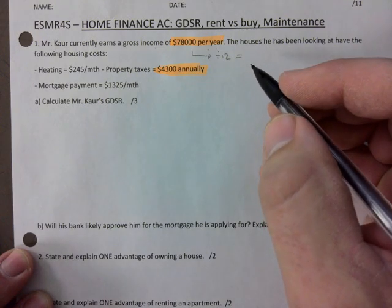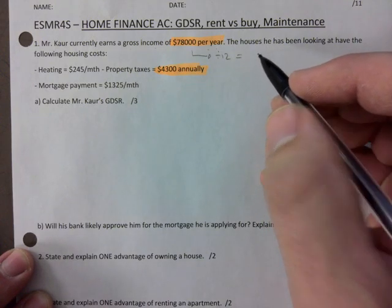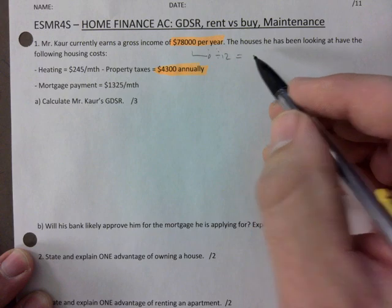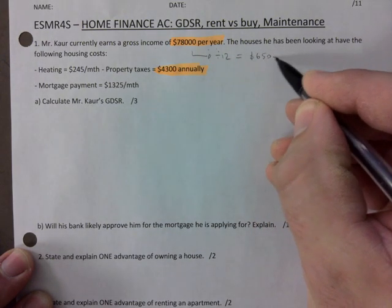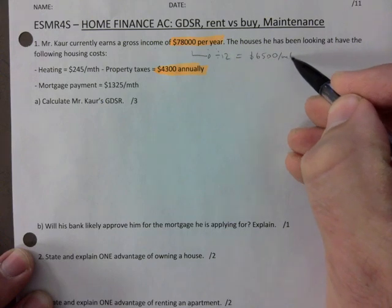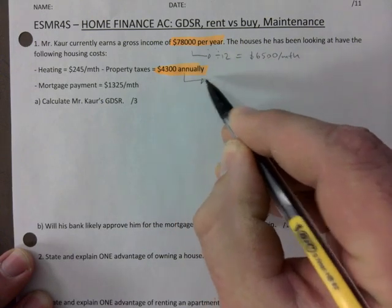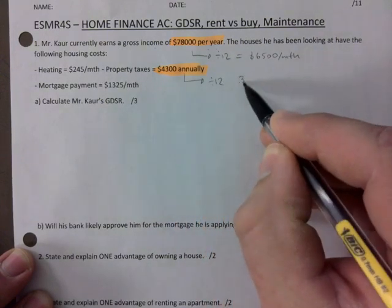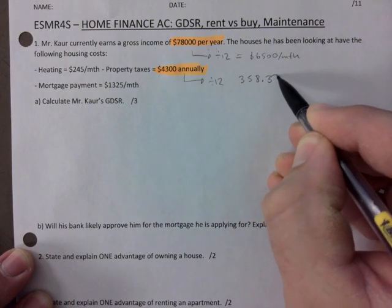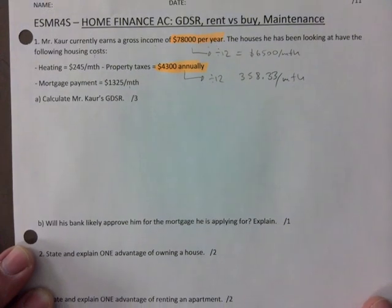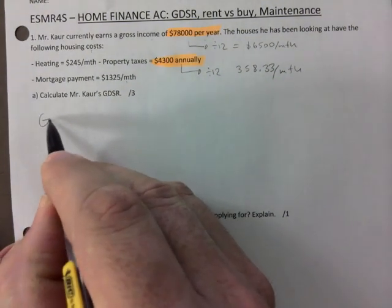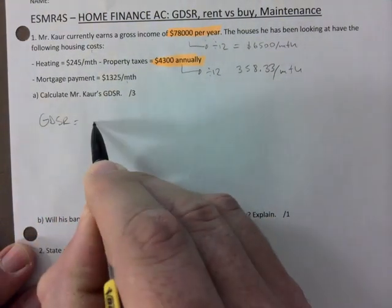You go ahead and divide this by 12. I get $358... no, sorry, $6,500, I was looking at the wrong one. $6,500 per month. Perfect. And then this I'll divide by 12, this is $358.33 per month.